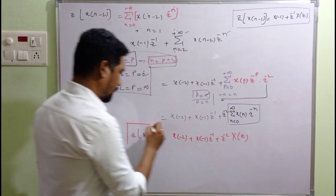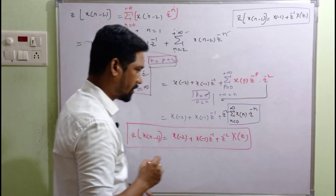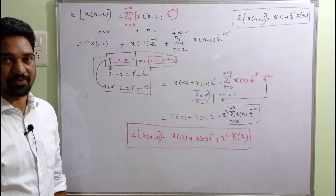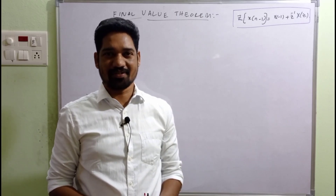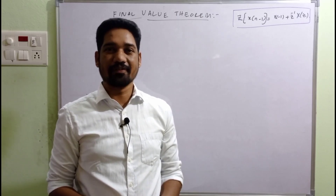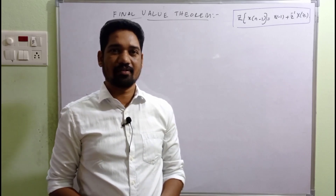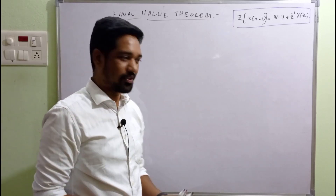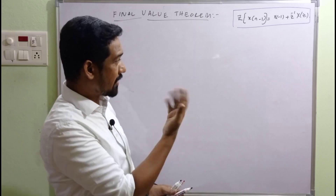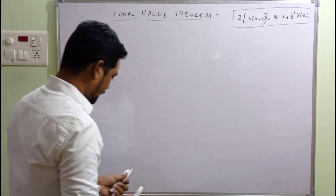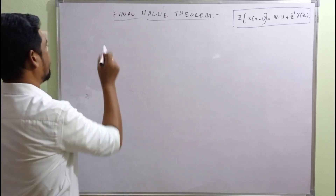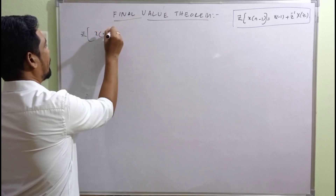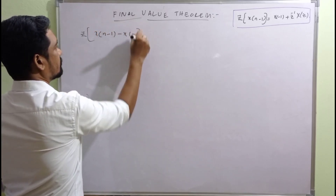While evaluating Z-transformations where initial conditions are given, we make use of this shifting property of the unilateral Z-transform. Evaluating the final value theorem in Z-transforms has always been a source of confusion, with different experts suggesting different approaches. Let's see the simpler way to reach the final value theorem.